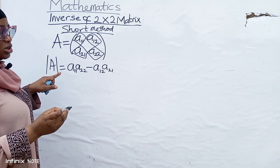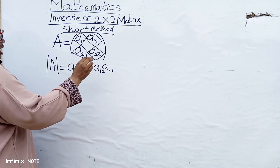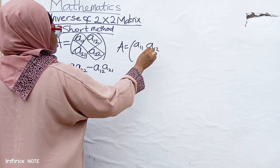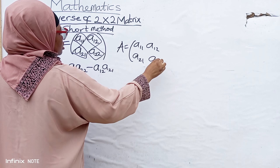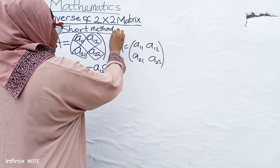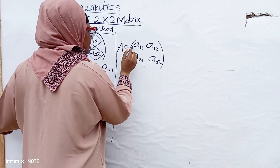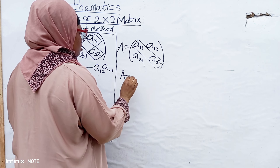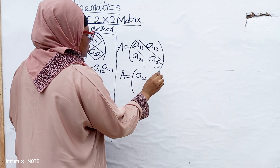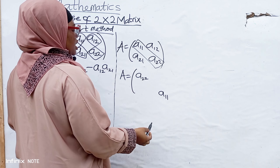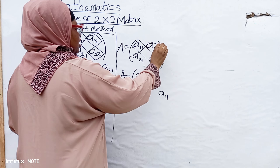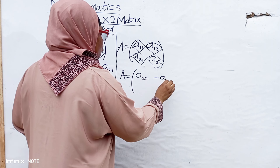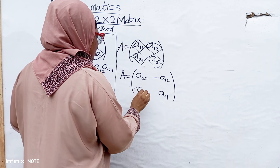After getting your determinant, write your A back: A11, A12, A21, A22. Now, for the elements in the leading diagonal, you will interchange them — so A11 and A22 swap positions. Then for those in the second diagonal, you put a minus sign, giving minus A12 and minus A21.